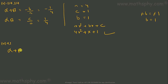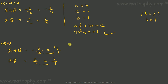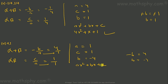Last question: alpha plus beta equals negative b over a equals 4, and alpha times beta equals c over a equals 1. Writing both as over 1, a=1, c=1, and negative b equals 4 so b equals negative 4. The quadratic polynomial is x² minus 4x plus 1.